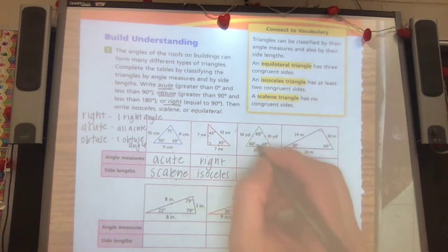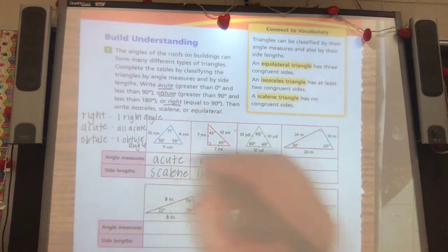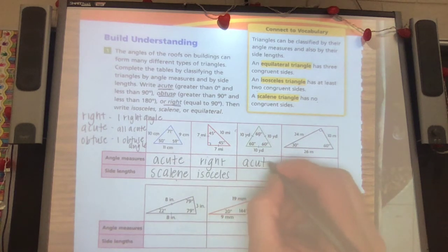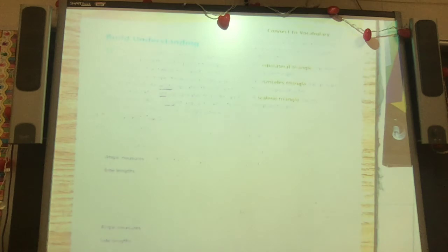This one, 60, 60, 60. That means acute. They're all less than 90. 10, 10, 10. That means it's equilateral because they're all 10.